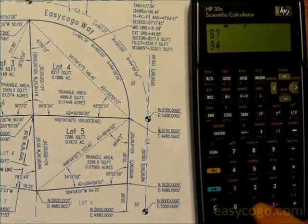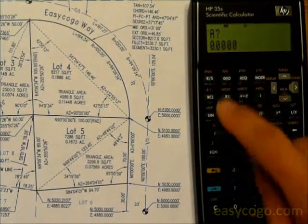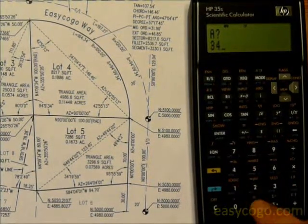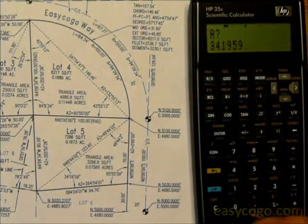First side, 94.70. Press RS. Now it prompts for the first angle. 34.1959, always in degree-minute-second format. Press RS.